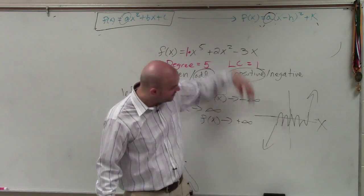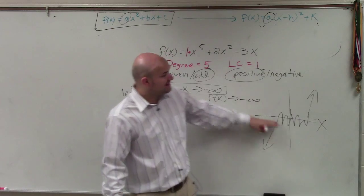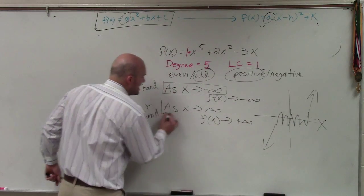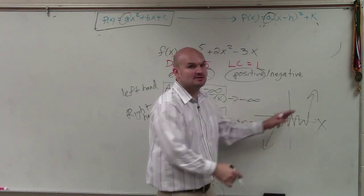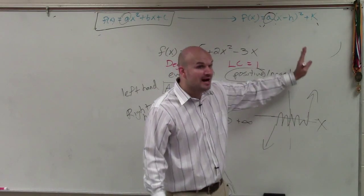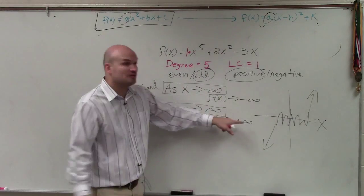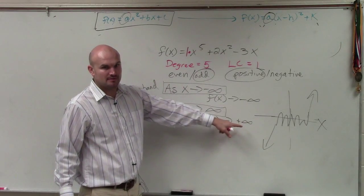f of x goes to negative infinity. They're going down, right? But as my x goes positive, so right hand always looks like that. As x goes positive, what are the y coordinates doing? They are going up. So therefore, f of x goes to positive infinity.